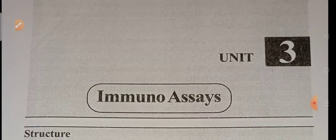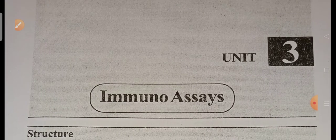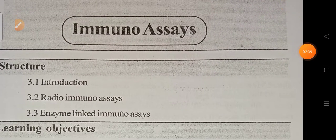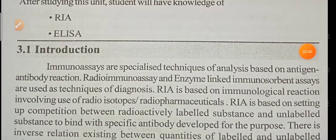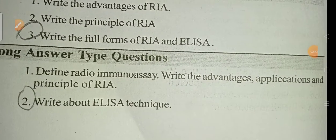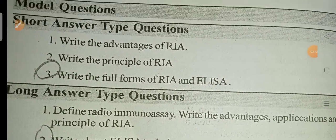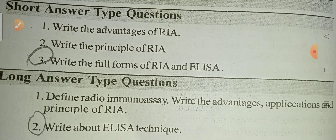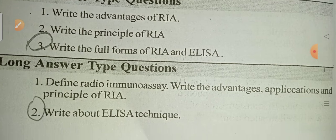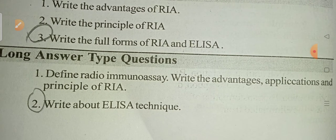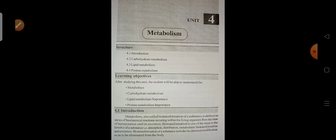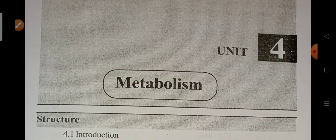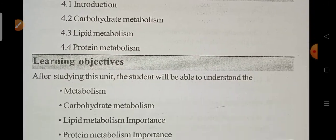For Unit 3, Immunoassays, two questions are important: write the full form of RIA and ELISA, and write about the ELISA technique. These are the important short answer and long answer questions from the immunoassays unit.